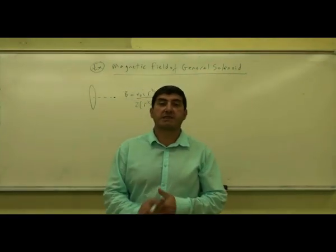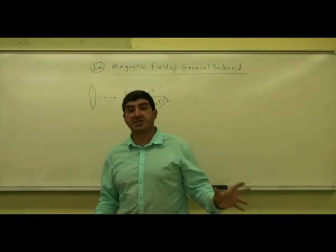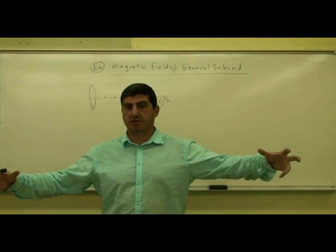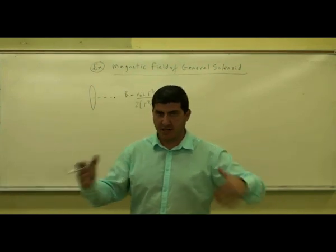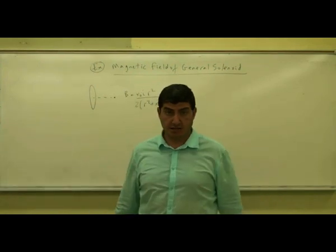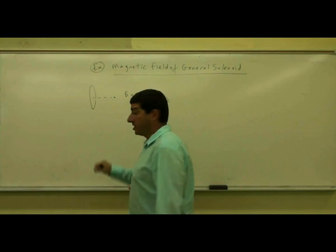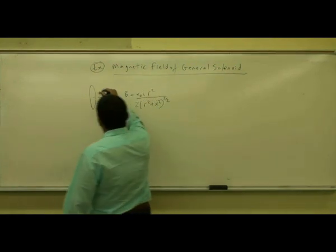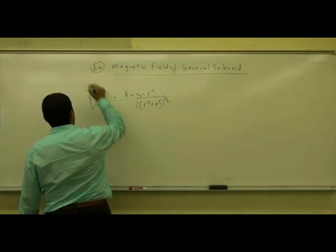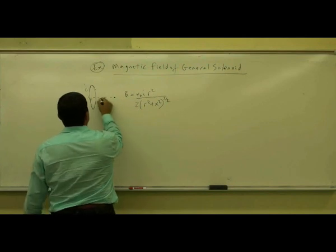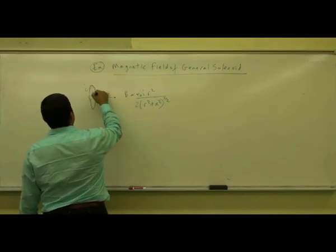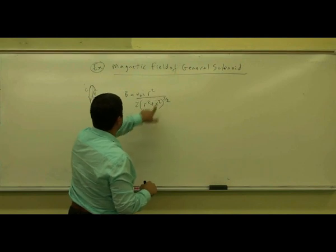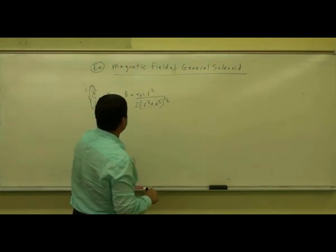We're going to derive the equation for the magnetic field of a general solenoid, and then apply that to a solenoid that's longer than its size, and then get the limiting cases. We're going to use a result that we have derived before: the magnetic field of a single coil of wire carrying current I, a distance x away, where the radius of the coil is r.